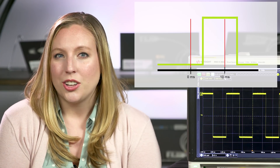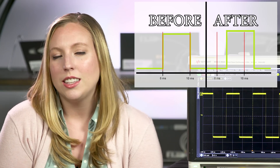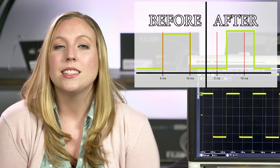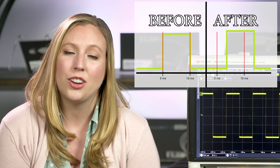Skew on a signal is basically a timing difference between rising edges. If a signal is skewed, this means the rising edge shown on the scope is delayed compared to when the rising edge truly occurs in your device. Along with these pesky timing differences, amplitude differences can occur as well, meaning your vertical measurements like peak-to-peak voltage will be incorrect.